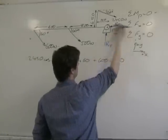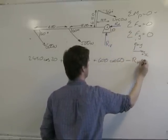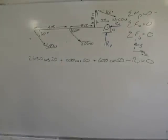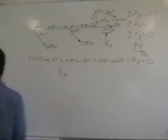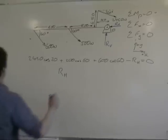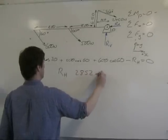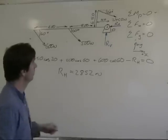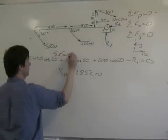RH is going in the opposite direction, so it's minus RH. That all equals zero. If you do the calculations and solve that, you find the horizontal component equals 2852 newtons. That's solving it for the horizontal direction.